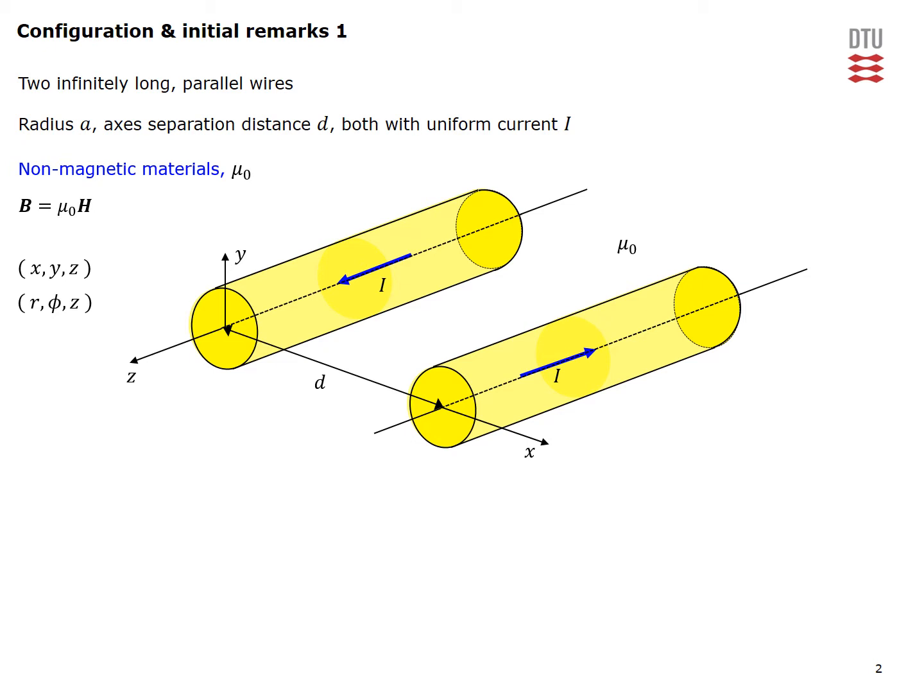To this system we introduce also the associated circular cylindrical r, φ, z coordinate system. We would like to determine the total inductance of our two-wire line and this inductance will have two contributions.